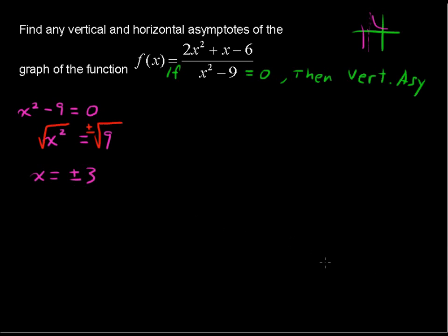So we have values of x equals plus or minus 3. So I'm going to put way down in the corner here, vertical asymptotes. We just found a couple, and that is x equals negative 3 and x equals positive 3.